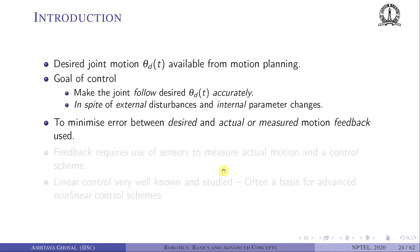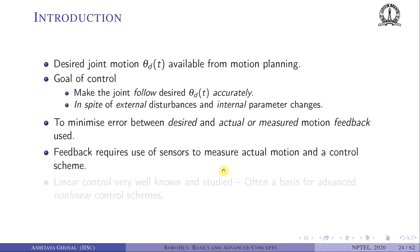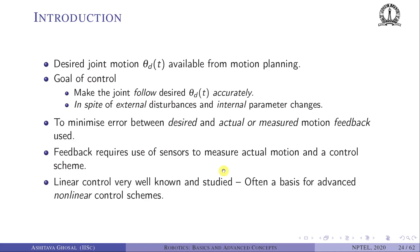The goal of control is to minimize the error between the desired and actual or measured motion. This requires feedback, so we need to measure the actual motion using sensors. We will look at a linear control scheme in this lecture because it is very well known, well studied, and is also a basis for advanced non-linear control schemes.